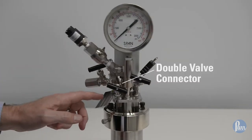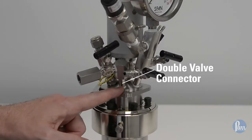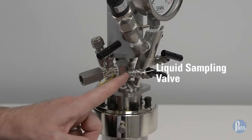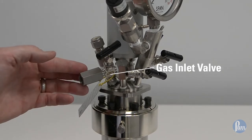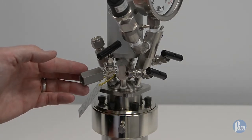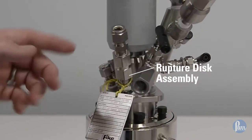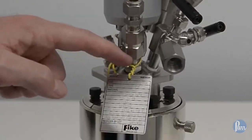As we proceed clockwise, we find the double valve assembly connected here, to which both a liquid sampling valve and a gas inlet valve are connected. Next is the rupture disc assembly with tag that shows the burst pressure of the rupture disc mounted in the head fitting.